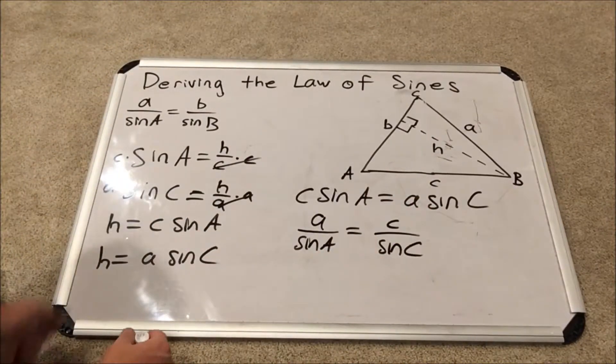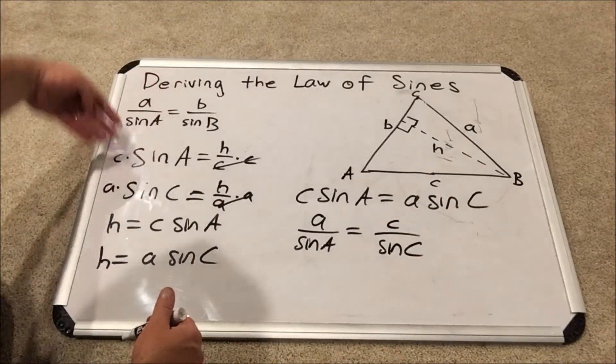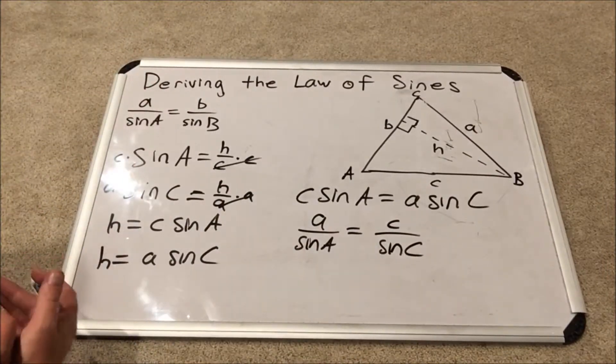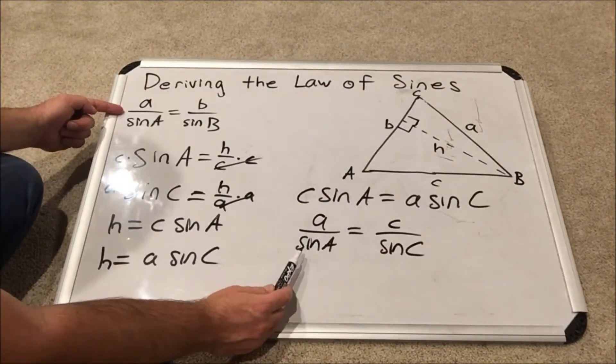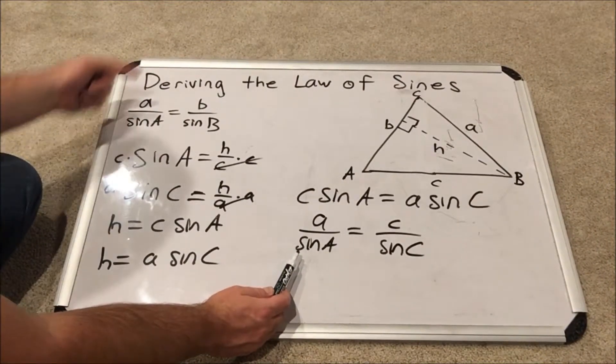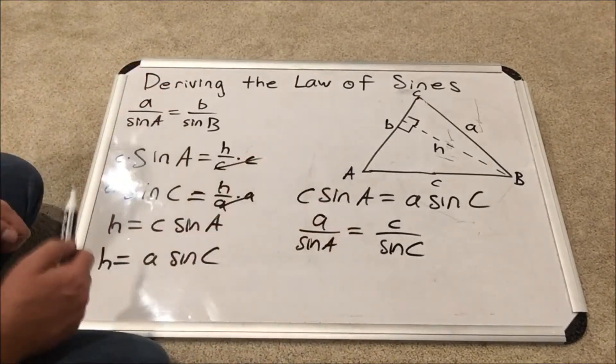Now, how does the B sine B, A sine A, and C sine C all equal each other? Well, by the transitive property. Notice here how A over sine A has to equal B over sine B and C over sine C.